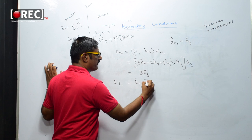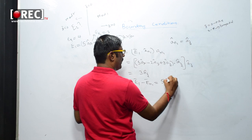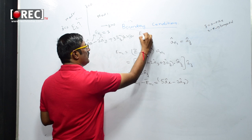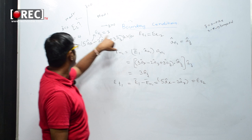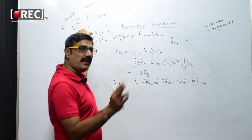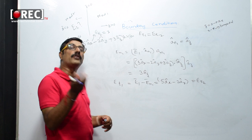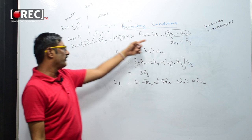Et1 = E1 − En1. Taking away the 3az component from E1 leaves the x and y components, so Et1 = 5ax − 2ay. From the boundary condition, Et1 = Et2, so Et2 = 5ax − 2ay as well. To find E2, we need both En2 and Et2. The boundary condition for normal components is Dn1 = Dn2.